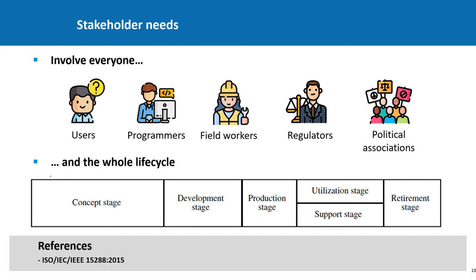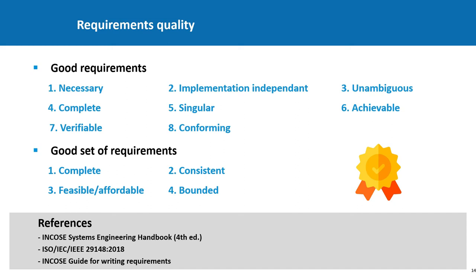The stakeholder needs allow us to derive chains of requirements, but the definition of a requirement is not that easy. In general, we say that a requirement must be necessary, implementation independent, unambiguous, complete, singular, achievable, verifiable, and conforming. I would add that a requirement also has to be justified — and that's why traceability is important. These qualities are for a single requirement. Then, a set of requirements must also be complete, consistent, feasible, affordable, and bounded.